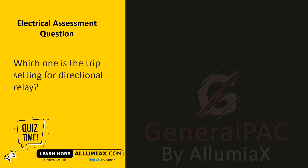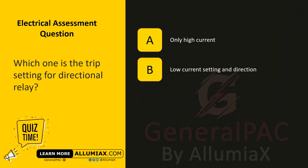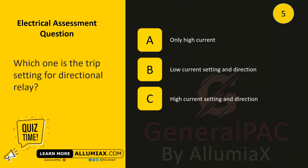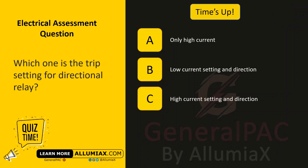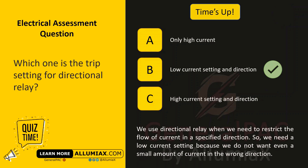Which one is the trip setting for a directional relay? A: only high current, B: low current setting and direction, C: high current setting and direction. The answer is B — low current setting and direction. We use a directional relay when we need to restrict the flow of current in a specified direction, so we need a low current setting because we do not want even a small amount of current in the wrong direction.